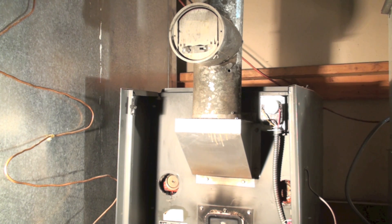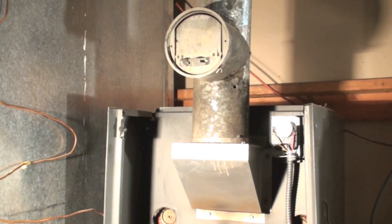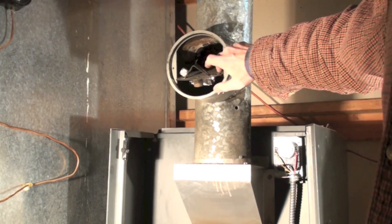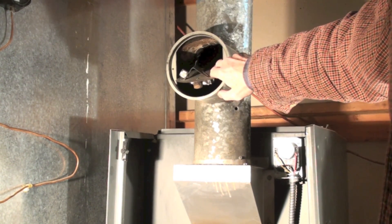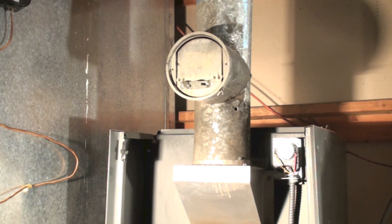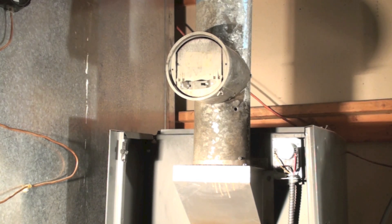That vent pipe is always under a negative pressure. Obviously I've got a great big hole right here in the barometric damper, and if there was a positive pressure here, the first place it would come out would be right there.